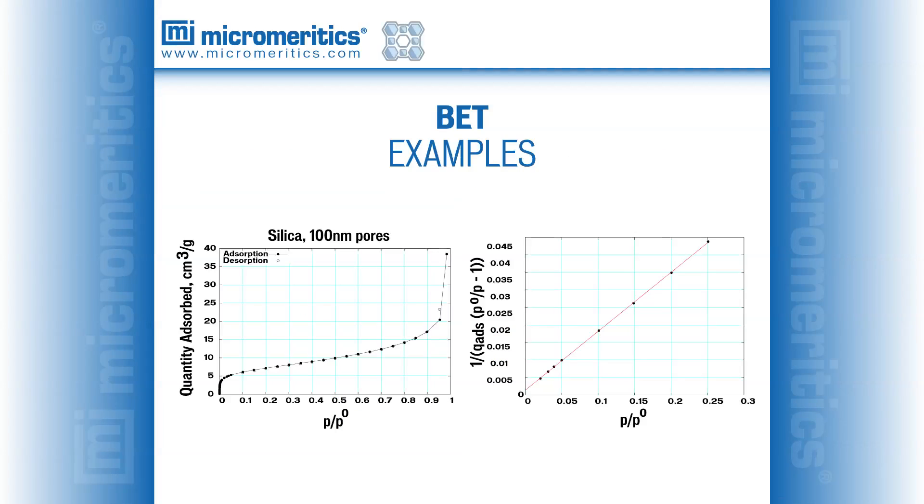The next few slides provide examples of determining the BET surface area of different materials. Macroporous silica exhibits a classic Type II isotherm and BET surface area is approximately 26 m squared per gram.